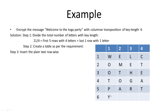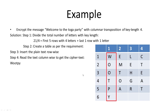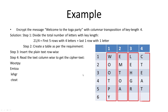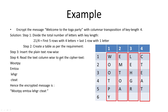To get the encrypted text, we read the text column-wise. The first column gives: W O O T P Y. The second column: E M T O A. The third column: L E H G R. The fourth column: C T E A T. So our encrypted message is: W O O T P Y E M T O A L E H G R C T E A T. This is how you do encryption without a keyword using columnar transposition cipher.